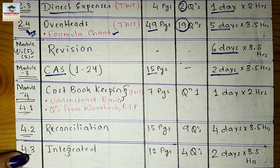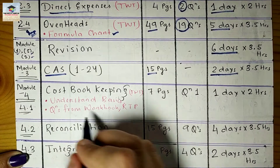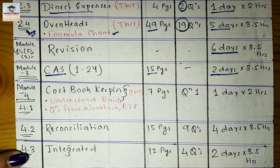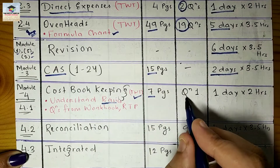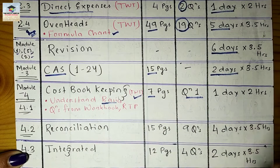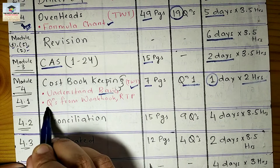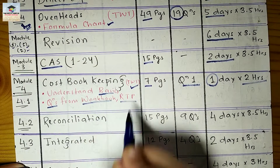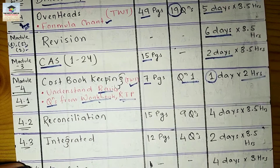After Module 3, we are left with only Module 4. The first part is Cost Bookkeeping — important as your basic foundation. You can find the classes on my channel. It has 7 pages and only one question, completable in one day with two hours. Practice more questions from the Workbook and RTPs (Revision Test Papers) — since you are new to this course, download the Workbook, RTP, and MTP from the ICMAI website.